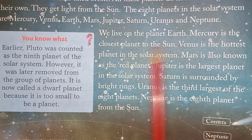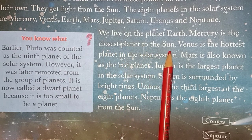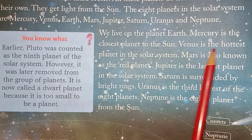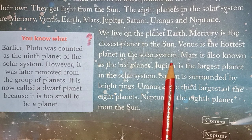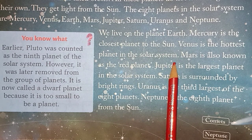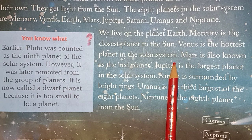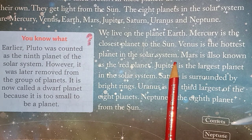Mercury is the closest planet to the Sun. Venus is the hottest planet in the solar system. Earth is the only planet where we can see life, because land, water, and air are present only on Earth.